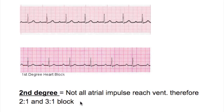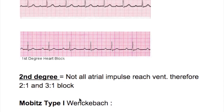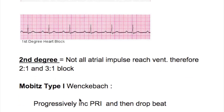In the second degree block not all impulses reach the ventricles. Therefore there is a 2-to-1 or 3-to-1 block. There are two types of the second degree block: Mobitz type 1 and Mobitz type 2.